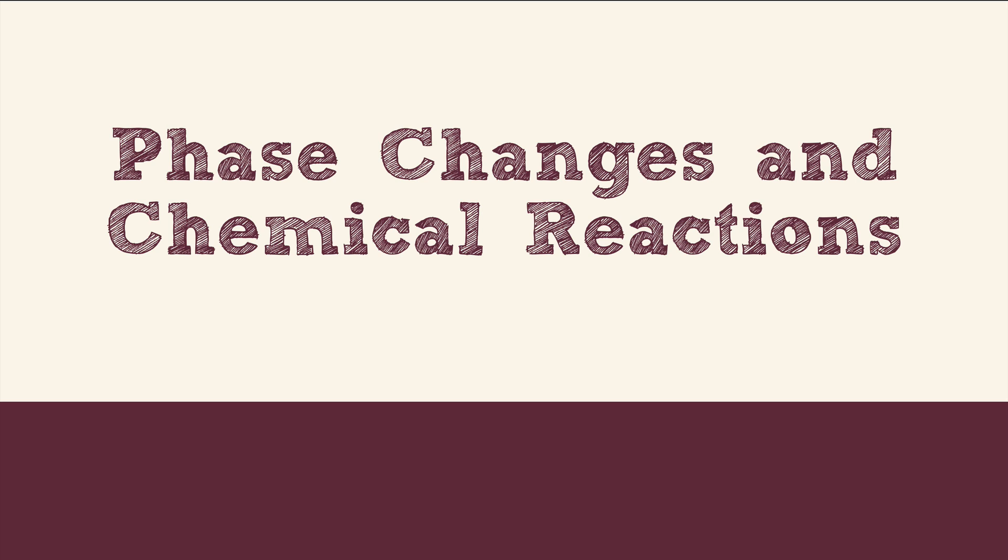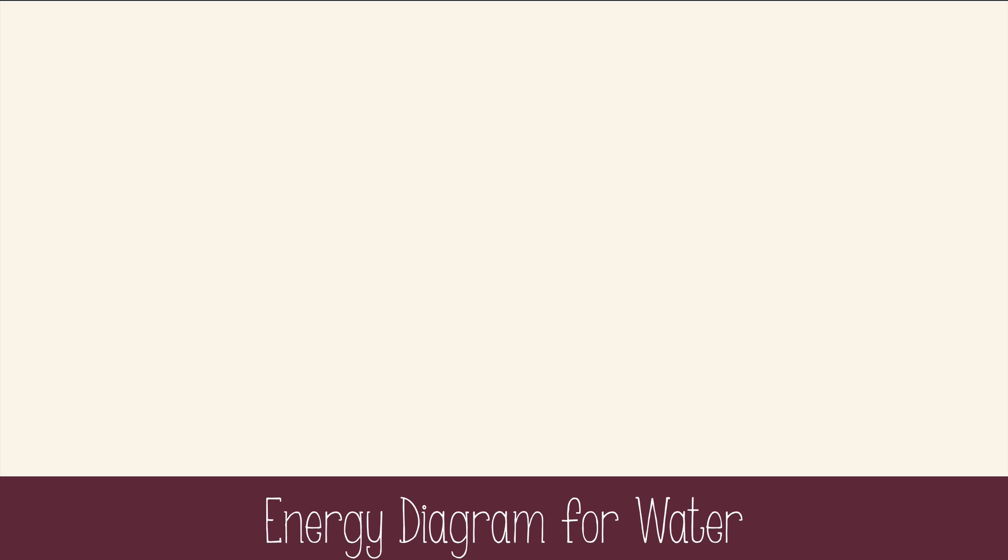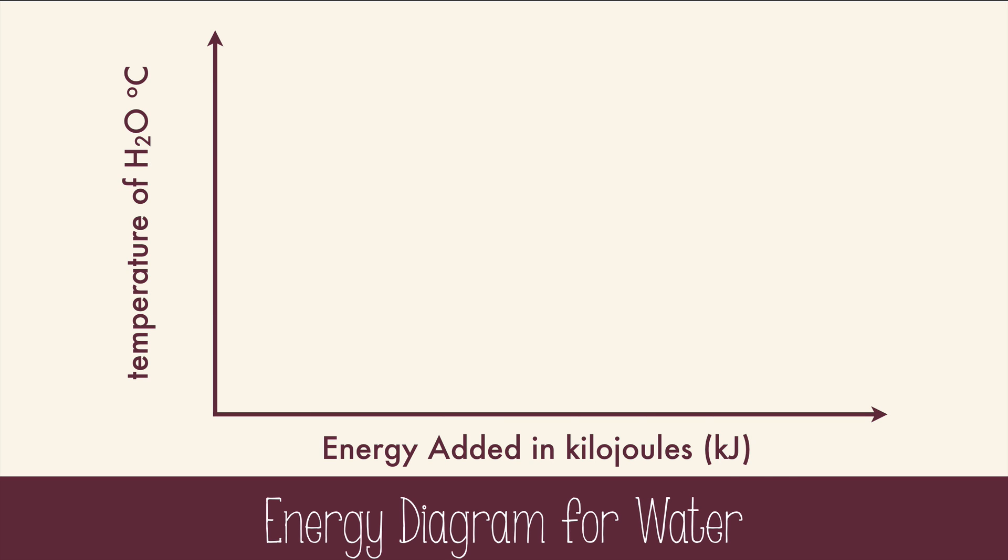The last thing we're going to look at are phase changes and chemical reactions. In this diagram, we have the temperature of water in degrees Celsius on the side and energy added in kilojoules on the bottom. The graph starts by showing ice at a temperature below freezing. As we add heat, the temperature goes up until we get to zero. At zero, even though heat is being added, the temperature isn't changing. This is because the heat is going into changing the phase of water from a solid to a liquid, not into increasing the kinetic energy of the particles. The amount of energy required to either melt or freeze water is 6.01 kilojoules per mole. This is known as the delta H or enthalpy of fusion. Enthalpy is just heat at a constant pressure.